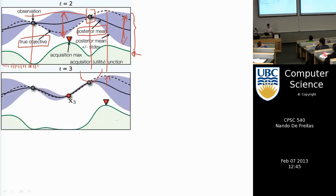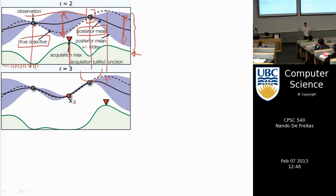For example, the green acquisition curve tells me to sample at a particular location. If I acquire a new third point there, I refit the Gaussian process — which is very quick, just inverting a 3×3 matrix. Then I recompute the acquisition function. I haven't yet told you how to build that acquisition function — that's what the rest of this lecture is about: how we construct the green curve.